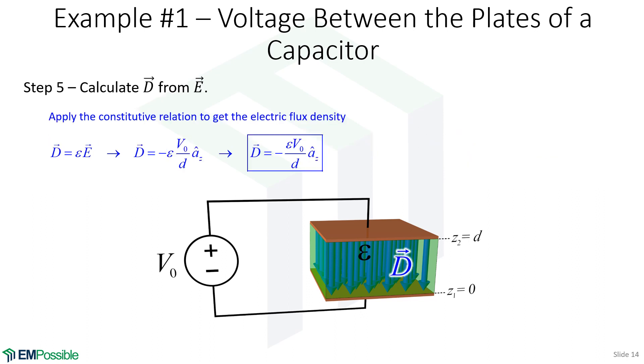The last step in this example, we apply the constitutive relation to calculate the electric flux density from the electric field intensity. So we put in our expression for E and there's also a negative sign out here, but we multiply by epsilon and we get an equation now for the electric flux density. Given the electric field intensity and electric flux density, we're in an excellent position to calculate anything else we could possibly want to know about this example.